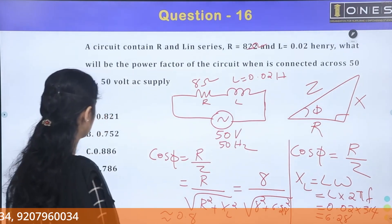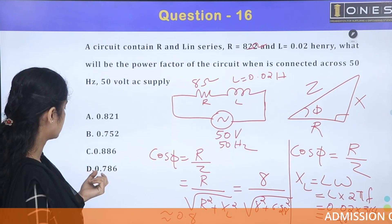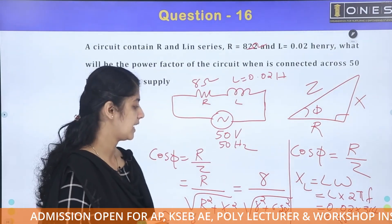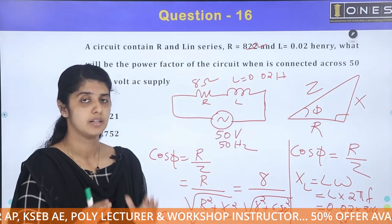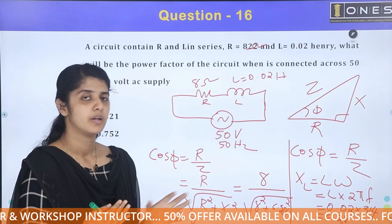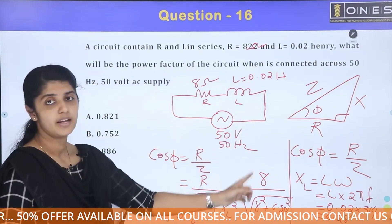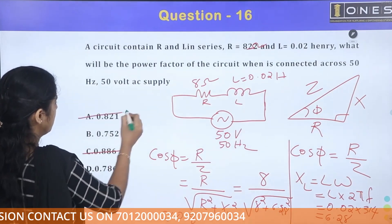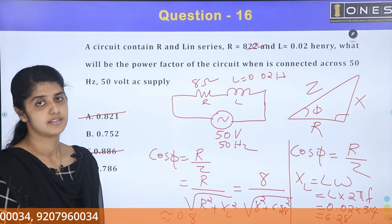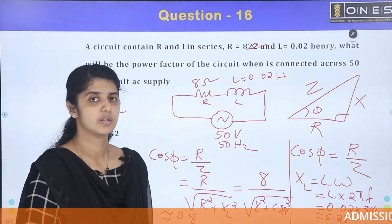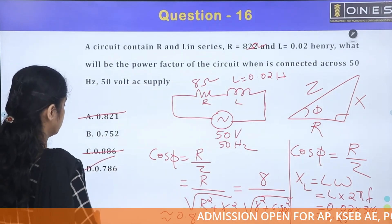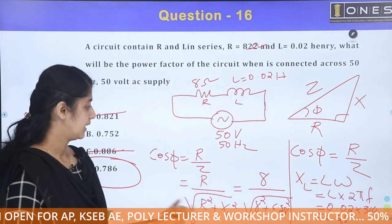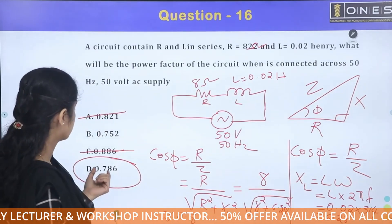With exact XL value of 6.28, the answer comes to approximately 0.786. The options given are 0.821, 0.752, 0.886, and 0.786. The correct answer is 0.786.